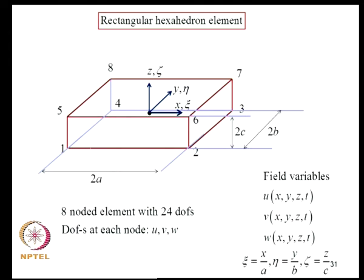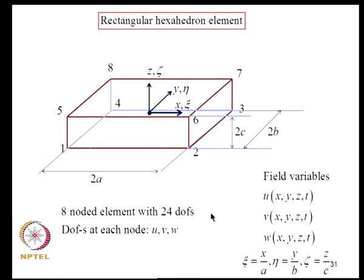For a rectangular hexahedron element, there are 8 nodes — numbered 1 through 8 — each with 3 degrees of freedom, giving 24 degrees of freedom total. All structural matrices are 24×24. A coordinate transformation is introduced: XI = X/A, ETA = Y/B, ZETA = Z/C, mapping the element to a cube of dimension 2 in each direction.